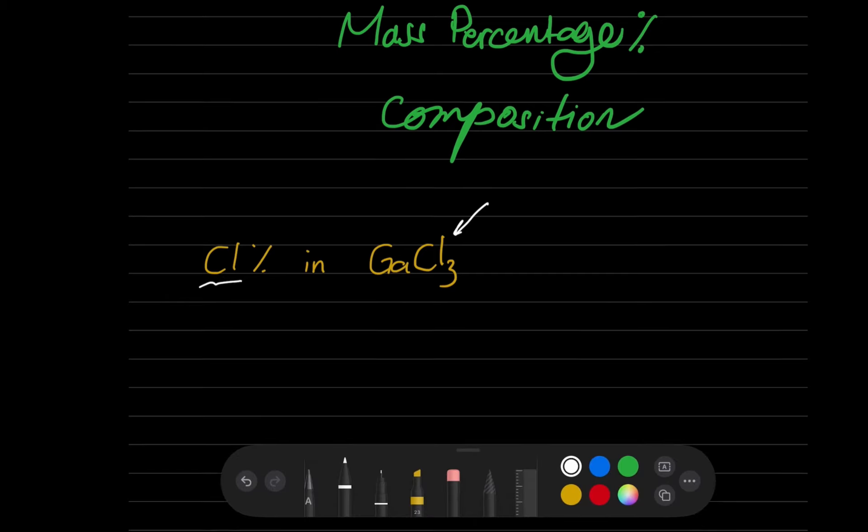The rule says we have to take the AR of the element and then multiply by the number of atoms of this element in this compound, and then we divide it over the overall molar mass.